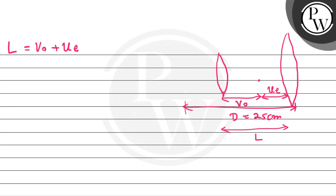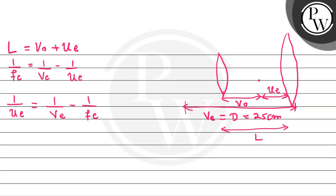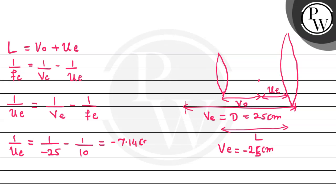To find u of E, we use the lens formula: 1 by f of E equals 1 by v of E minus 1 by u of E, so 1 by u of E equals 1 by v of E minus 1 by f of E. Here capital D equals v of E equals minus 25 cm, because the image is on the left side of the eyepiece. So 1 by u of E equals 1 by minus 25 minus 1 by 10, which gives u of E approximately minus 7.14 cm.